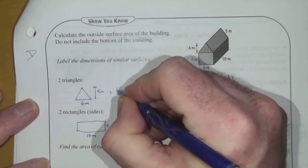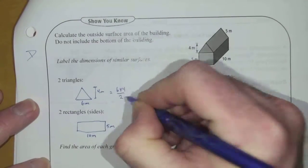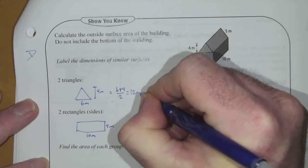So the area here is equal to 6 times 4 divided by 2, because it's a triangle. So it's 12 meters squared.